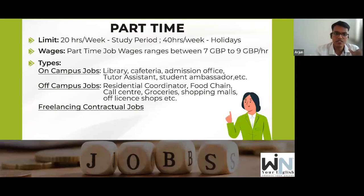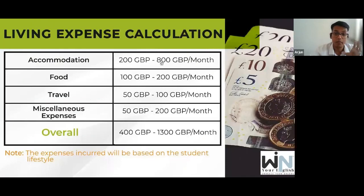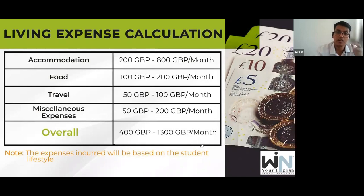For living expenses, the basic amounts are: accommodation maximum 800 GBP, food maximum 200 GBP, and miscellaneous 200 GBP. Overall, expenses range between 400 to 1,300 GBP per month depending on lifestyle. Students sharing rooms can live below this range.